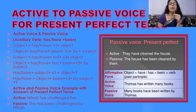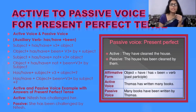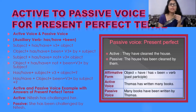Active to passive voice rules for present perfect tense. For example, 'Nitesh has challenged her' becomes 'She has been challenged by Nitesh.' When the auxiliary verb is has or have, you add 'been' when changing from active to passive. Another example: 'They have cleaned the house' becomes 'The house has been cleaned by them.'